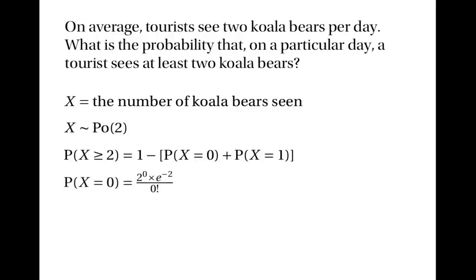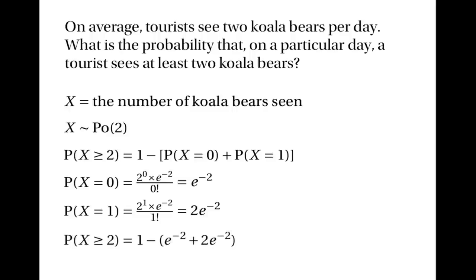The probability of having no koalas is 2 to the power of 0 times e to the power of minus 2, divided by 0 factorial. Since 2 to the power of 0 and 0 factorial are both 1, this simplifies to e to the power of minus 2. The probability of having 1 koala is 2 to the power of 1 times e to the power of minus 2, divided by 1 factorial, which simplifies to 2 times e to the power of minus 2. So the probability of 2 or more koalas is 1 minus e to the power of minus 2 plus 2e to the power of minus 2, which equals 1 minus 3e to the power of minus 2, giving 0.594 to three significant figures.